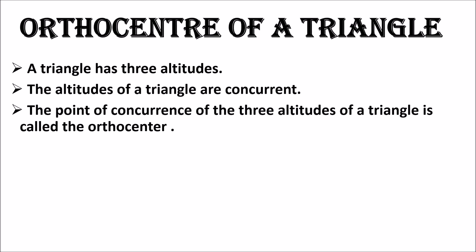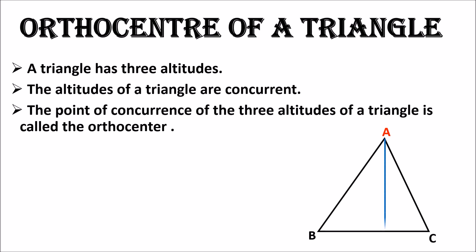We will understand the ortho center with the help of an example. Here we have taken a triangle ABC. We will make an altitude from each vertex to its opposite side. First, we take vertex A and make a perpendicular from vertex A to its opposite side BC. You can see it is a perpendicular segment, so seg AX is one altitude of triangle ABC. Now we make a perpendicular from vertex B to its opposite side AC.